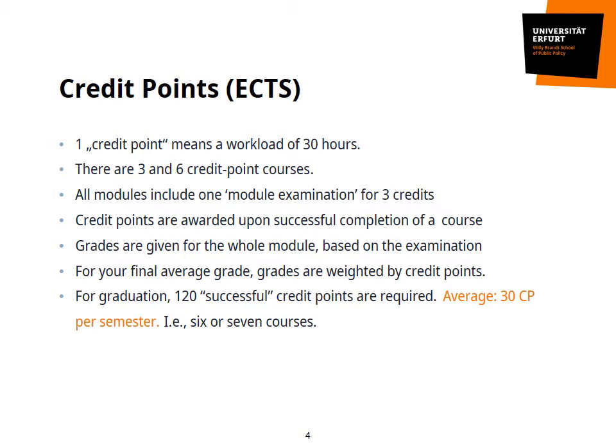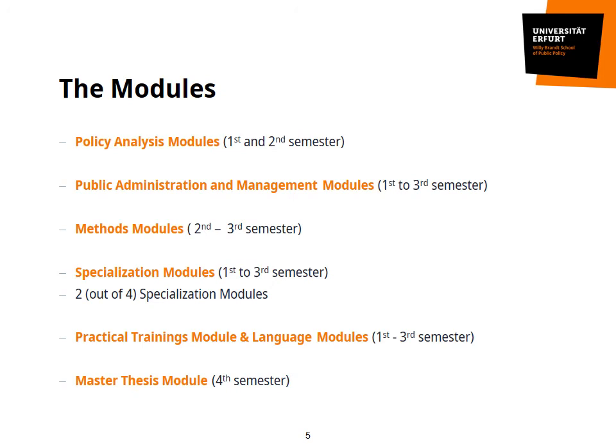For graduation, you need 120 credit points. That means in four semesters that on average you will need to earn 30 credit points per semester. That breaks down to six or seven courses per semester. There is a difference between courses and modules. You will need to finish a total of 13 modules within the Master of Public Policy. Typically, one module consists of one course and one exam. However, a few modules have two courses per module, so that you end up taking 15 or 16 courses altogether.